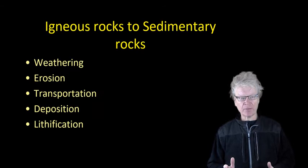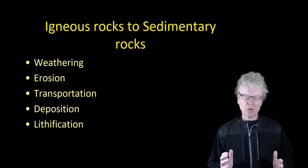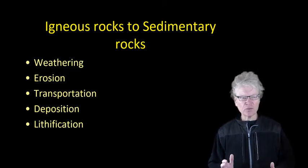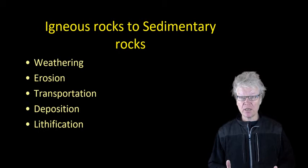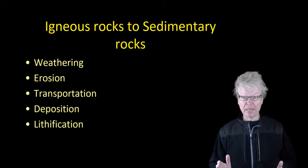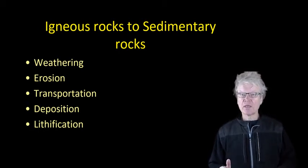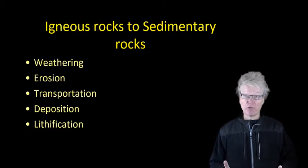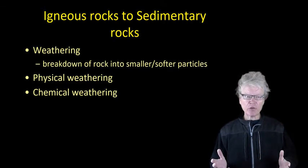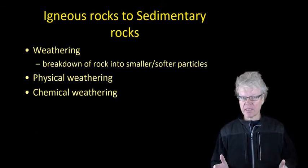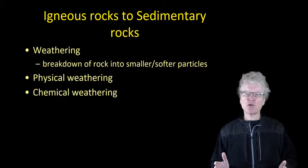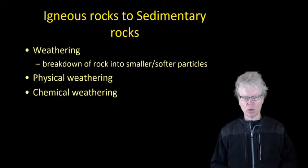We need to look at the types of processes that occur for that to happen. We're going to look at weathering, erosion, transportation, deposition, and then lithification. So let's look at the first one: weathering. Weathering, put simply, is the breakdown of rocks into smaller particles. There are two types: physical and chemical weathering.